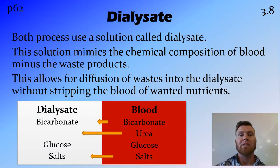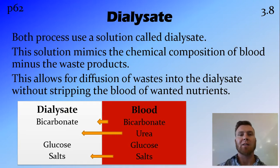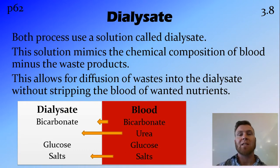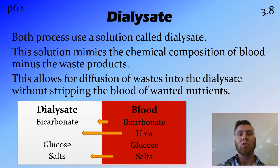Both these processes use a liquid called dialysate, and this liquid mimics the chemical composition of the blood but doesn't have those waste products in it. So if the blood has a certain amount of glucose in it, the dialysate will have around the same amount of sugar the blood is supposed to have. It will have the same amount of salts such as sodium chloride that the blood is supposed to have, and this allows for diffusion of those things they don't want in the blood. For example, urea — because there's no urea in the dialysate — very quickly and easily diffuses across that semi-permeable membrane. Glucose on the other hand is found on both sides of the semi-permeable membrane, so there's going to be no net movement unless the levels in the blood are somewhat out.